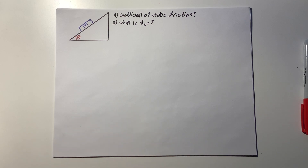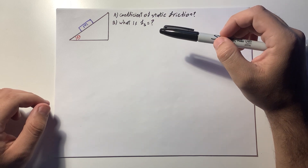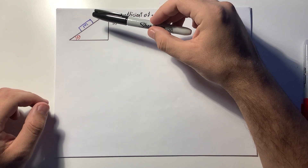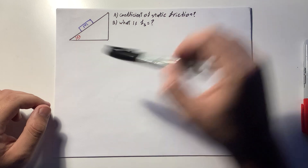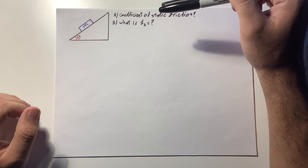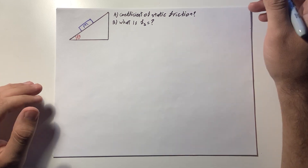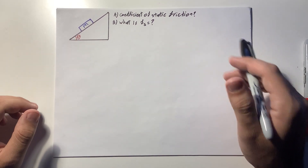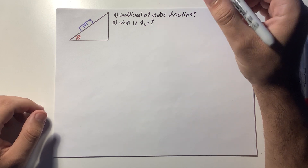Hey, what's going on YouTube. Here's a problem for today: there is a mass m sitting on an inclined plane at some angle theta, and for this question we have static friction. I thought it would be a good idea to go over what static friction is and how it works, and then hop back on this problem.